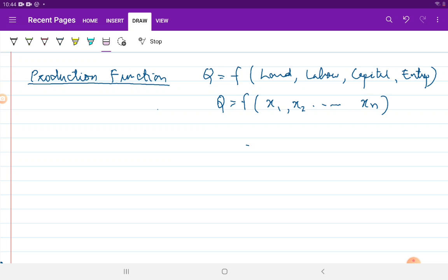In traditional microeconomics we used to think mainly in terms of four factor inputs: land, labor, capital, and entrepreneurship.